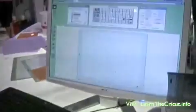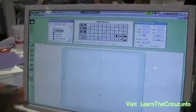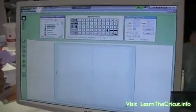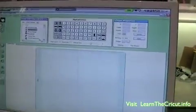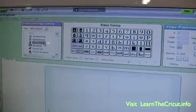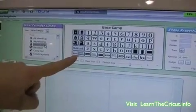What we do is you take your disk out of the machine and load it into your computer. Then you get this screen. You have access to all of the Cricut cartridges and you simply select the cartridge you're going to work with and it pops up here.